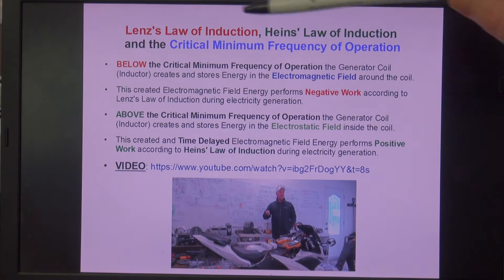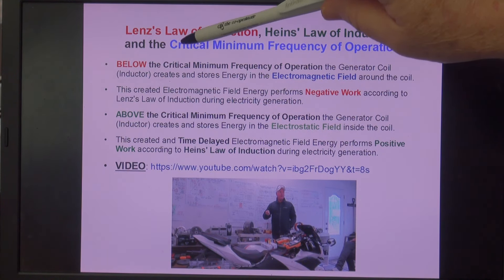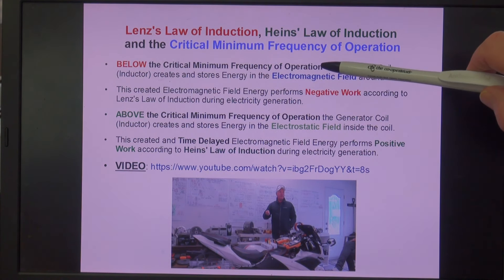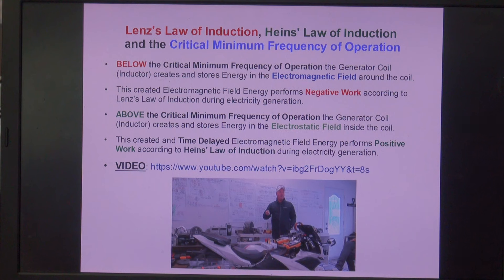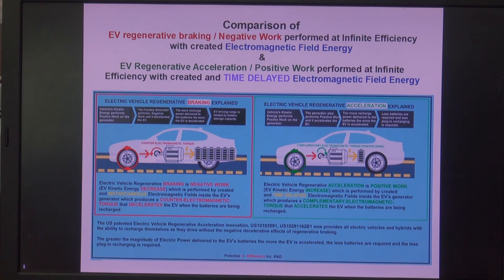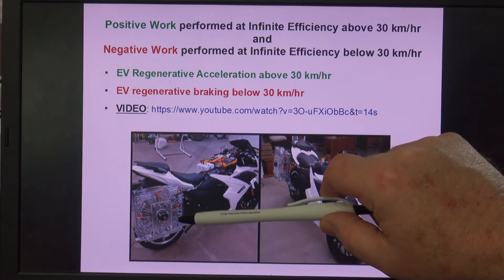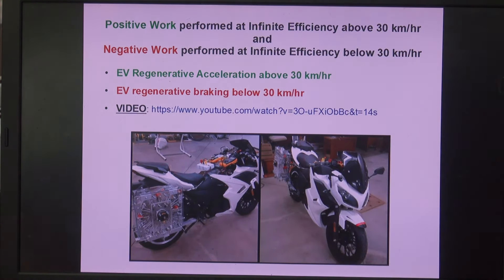The difference between Lenz's Law and Heinz's Law of Induction is the frequency of operation of the Regen-X generator coil. Below the critical minimum frequency of operation, negative work is performed; above it, positive work is performed. This is evident in the electric vehicle scenario where the Regen-X generator coils operate above their critical minimum frequency — around 30 kilometers per hour — for positive work, and below their critical minimum frequency — below 30 kilometers per hour — for negative work.